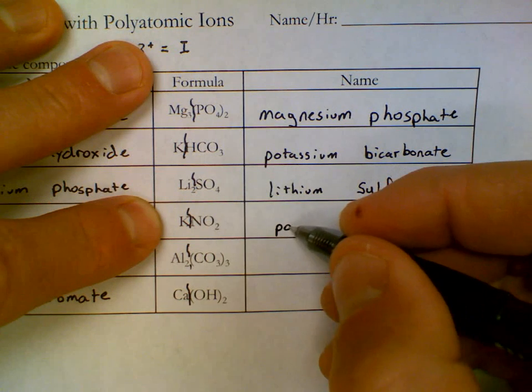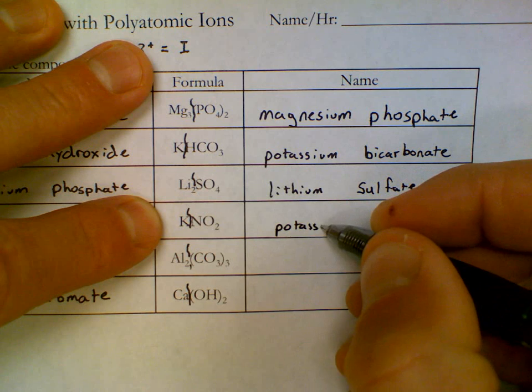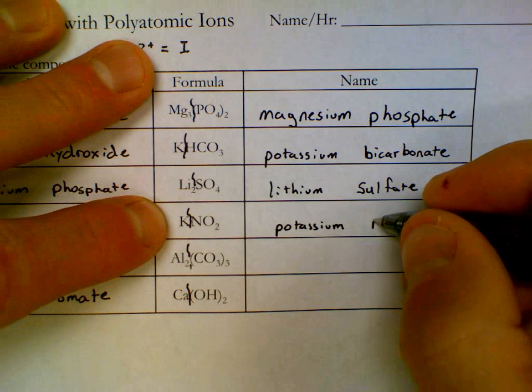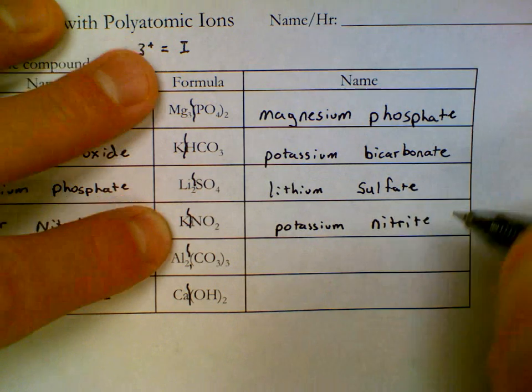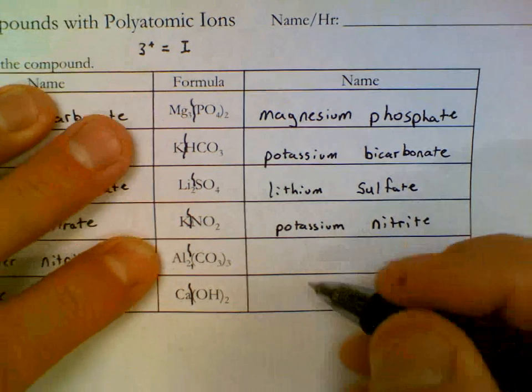K is called potassium. And NO₂ is called nitrite, I-T-E. Make sure those last three of the suffix is very clear.